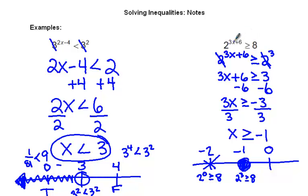And plug in 0. 3 times 0 is 0. Plus 6 is 6. And you get 2 to the 6th.